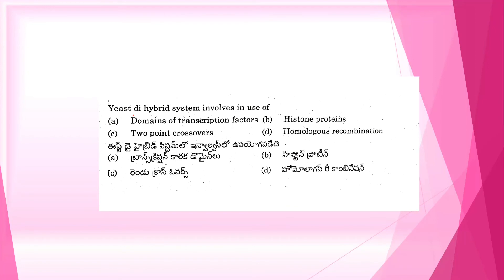Next question. The two-hybrid system involves the use of: A. Domains of transcription factors. B. Histone proteins. C. Two-point crossovers. D. Homologous recombination. The correct option is A, domains of transcription factors.